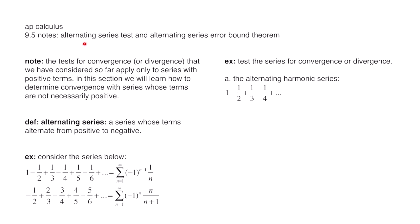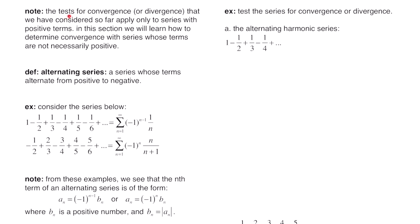In this lesson we're going to cover the alternating series test and the alternating series error bound theorem. The tests for convergence or divergence we have considered so far apply only to series with positive terms. In this section we will learn how to determine convergence with series whose terms are not necessarily positive. An alternating series is a series whose terms alternate from positive to negative.